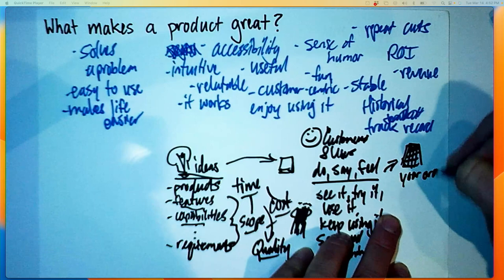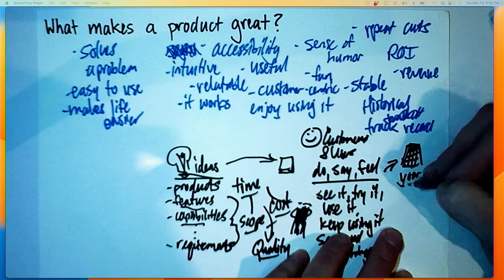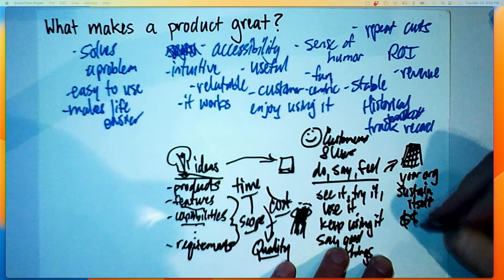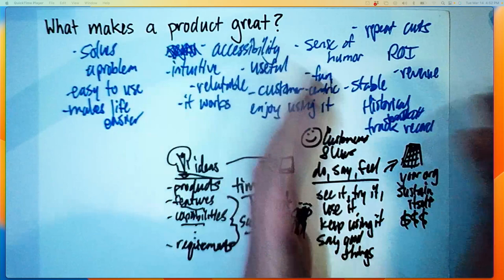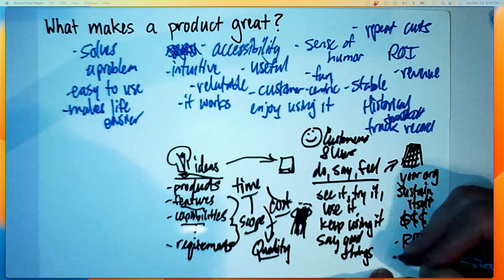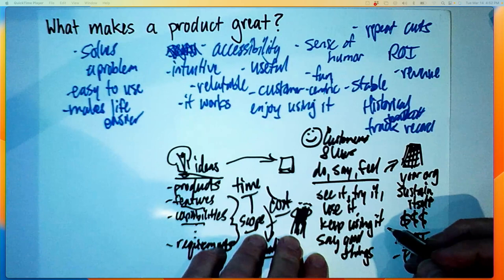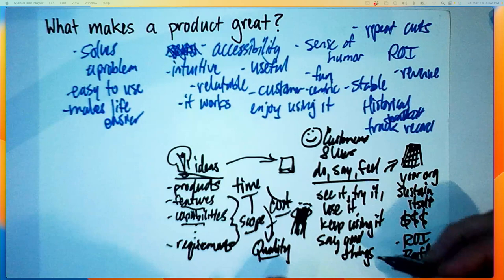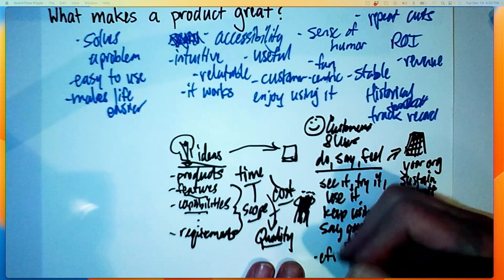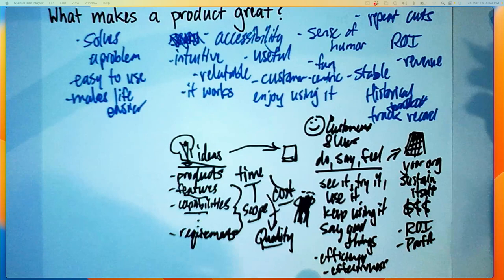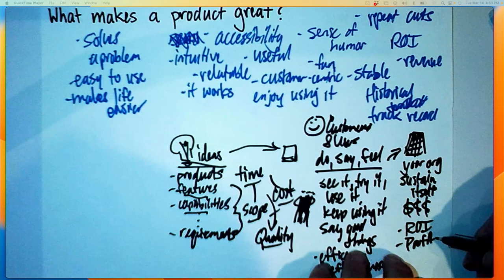If we release a new feature and a customer sees it, tries to use it, and says good things, that's nice. But products are leveraged investments. We need lots of people to do this stuff. When lots of people see it, try it, use it, keep using it, and say good things, that's when you feel it inside your organization. If this is your org, your organization has a different responsibility than your customers. Your organization has a responsibility to sustain itself. And it does not sustain itself with happy people. It doesn't pay your paychecks with happy people. It pays your paychecks with money. If lots of people see, try, use, keep using, and along the way pay for this, that's when we see return on investment. Or that's when we see profit.